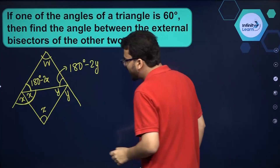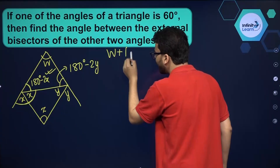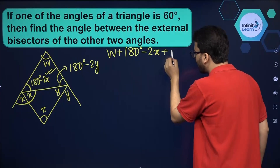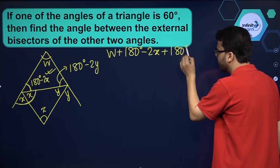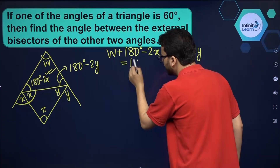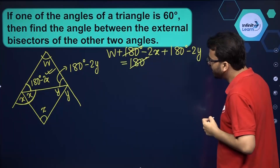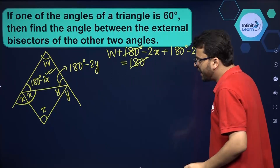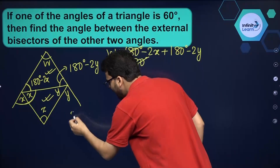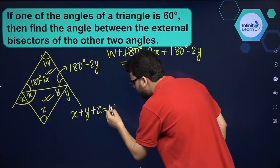Now I can use the angle sum property in the outer triangle. So I get: w plus (180 minus 2x) plus (180 minus 2y) equals 180. So from here, I can cancel out one 180. Now, for the inner triangle, I can also use the angle sum property: x plus y plus z equals 180.